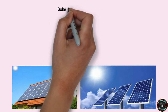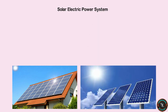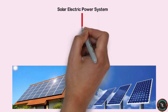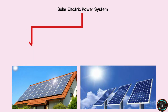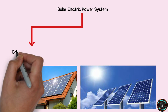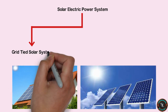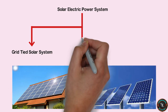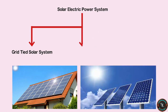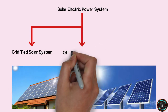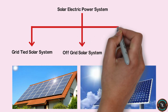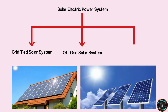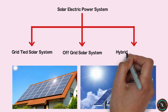There are three main types of solar electric power systems: grid-tied solar system, off-grid solar system, and hybrid solar system.